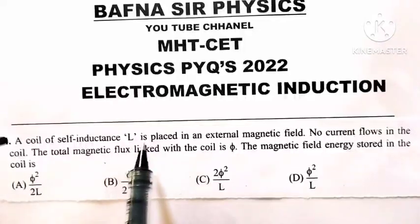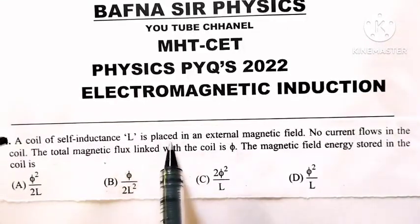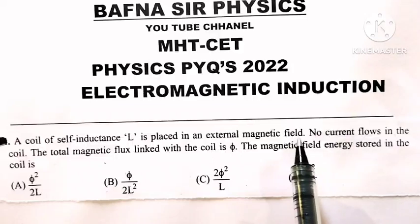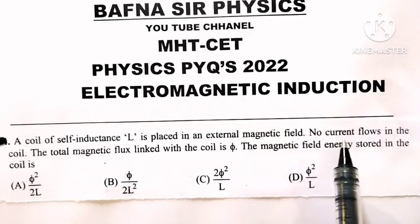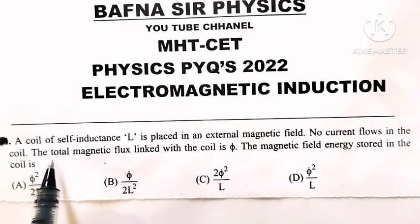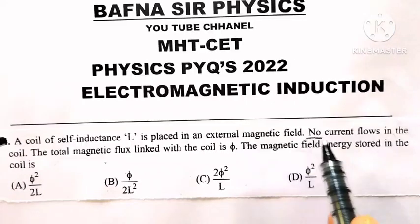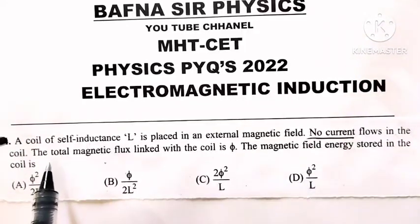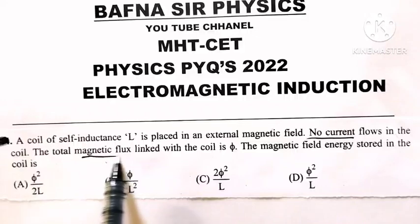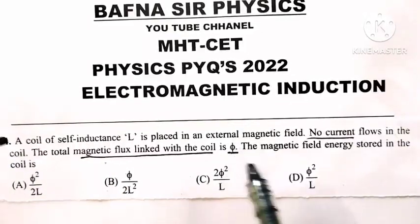A coil of self-inductance L is placed in an external magnetic field. No current flows in the coil. The total magnetic flux linked with the coil is 5.